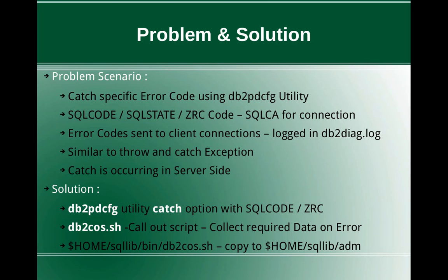There is a db2cos.sh callout script. This callout script can be modified to collect the required data when a particular error condition occurs. Once you configure db2pd cfg and that particular SQL code error occurs, it will execute the db2cos.sh callout script. This file is in the $HOME/sqllib/bin directory — that is the master copy, so don't change that. Copy it to the $HOME/sqllib/adm folder, where you can modify it and add your own custom code to execute when the error condition occurs.